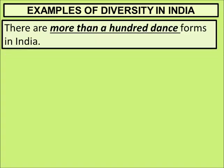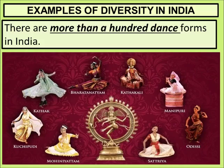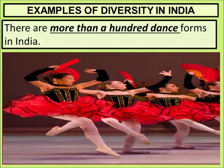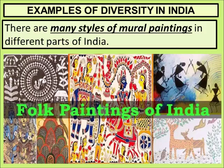There are more than a hundred dance forms in India. If we talk about Japan, they have one dance form; if we talk about Spain, they have one Spanish dance. But in India we have Bharatnatyam, Kathak, Manipuri, Odissi, Kuchipudi, Mohiniyattam, Garba, and Bhangra. There are also many styles of mural paintings in different parts of India.